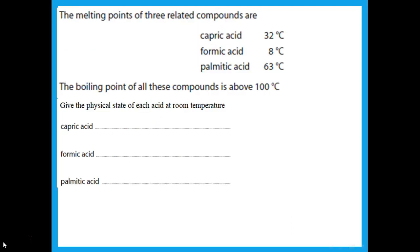Give the physical state of each acid. Room temperature is regarded as 20 or 25°C. Capric acid has a melting point of 32°C — at room temperature it hasn't melted yet, so it is a solid. Formic acid has a melting point of 8°C — at room temperature it has already melted and hasn't boiled, so it is a liquid. Palmitic acid has a high melting point, so at room temperature it is also a solid.